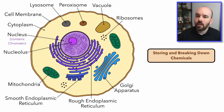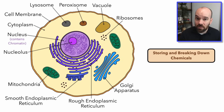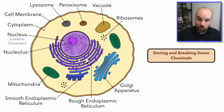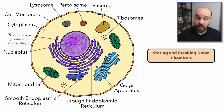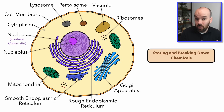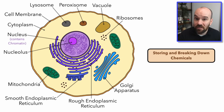Finally, we have the vacuole, which is just going to be for storage of different chemicals. Plant cells have giant vacuoles that fill up a majority of the space inside the cell. Animal cells like those in our bodies have small vacuoles for just small amounts of storage, but certain cells like fat cells will have larger vacuoles because they're storing fat molecules. So vacuoles are for storage.